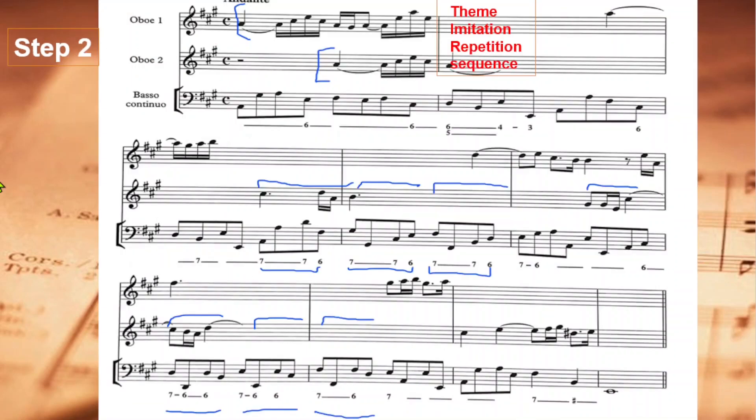Step 2. Analyze the theme and mark all the tentative imitation, repetition, or sequence. In bar 1, we can see the first two beats in oboe 1 are being repeated in oboe 2.